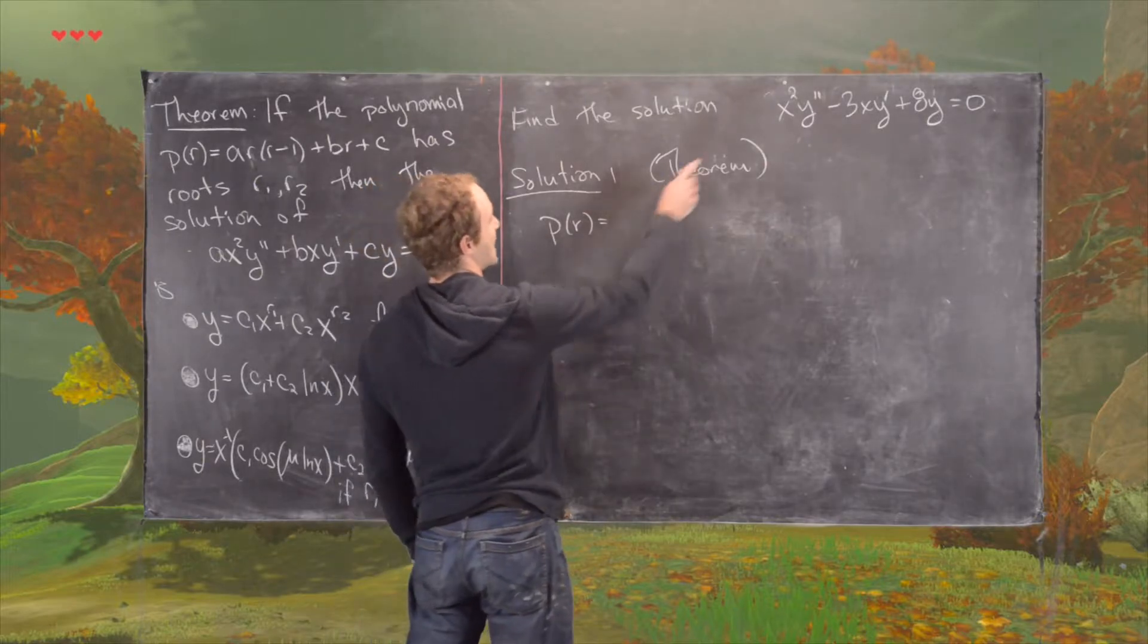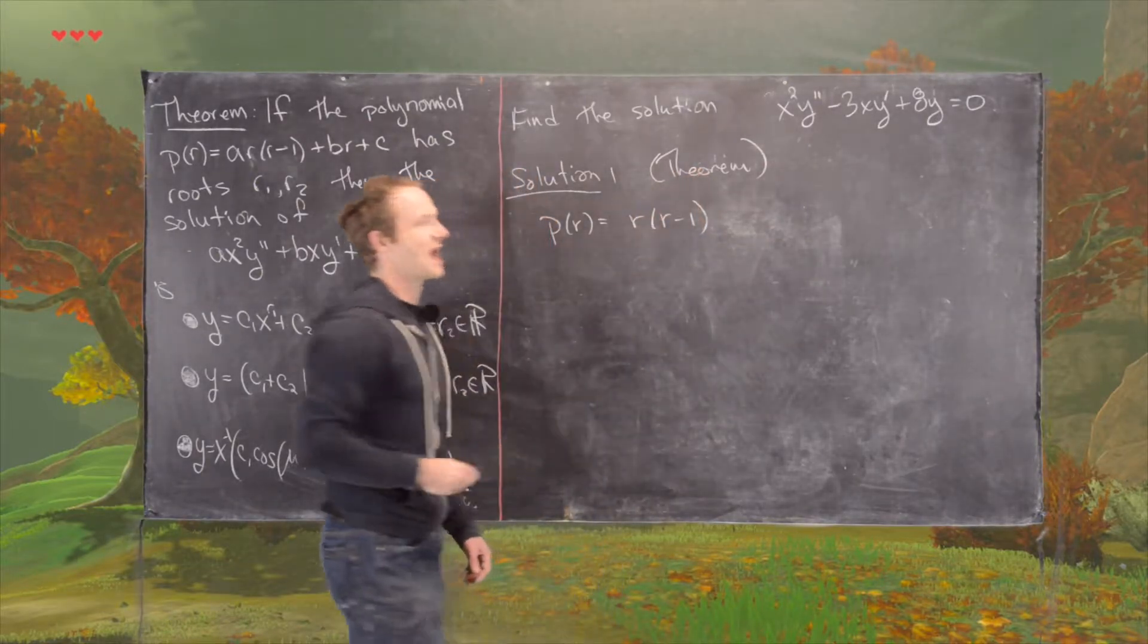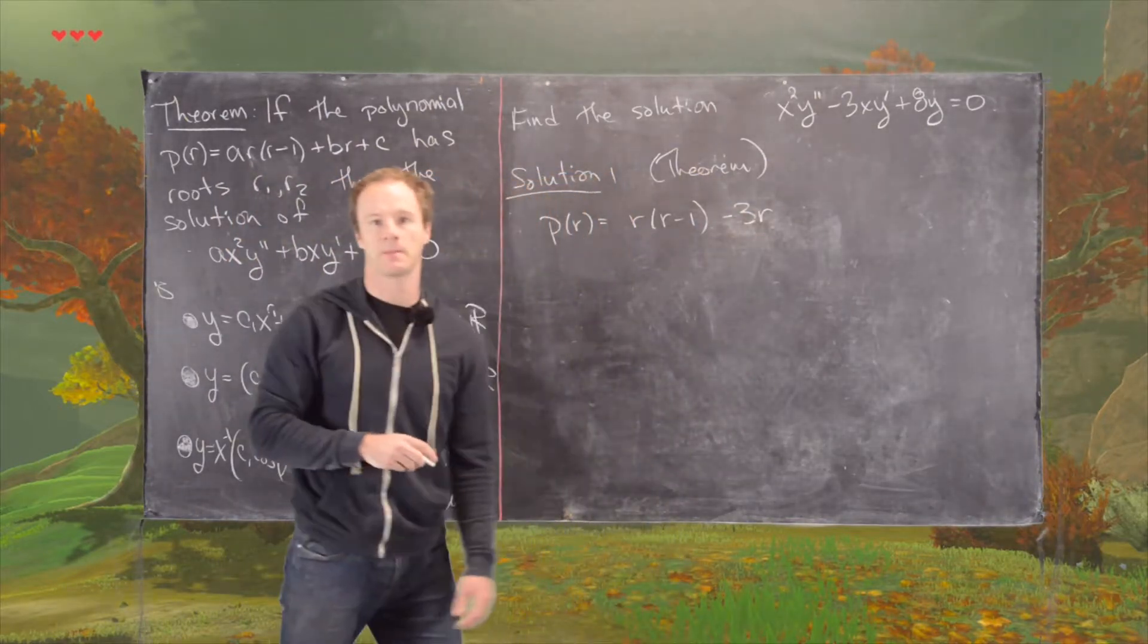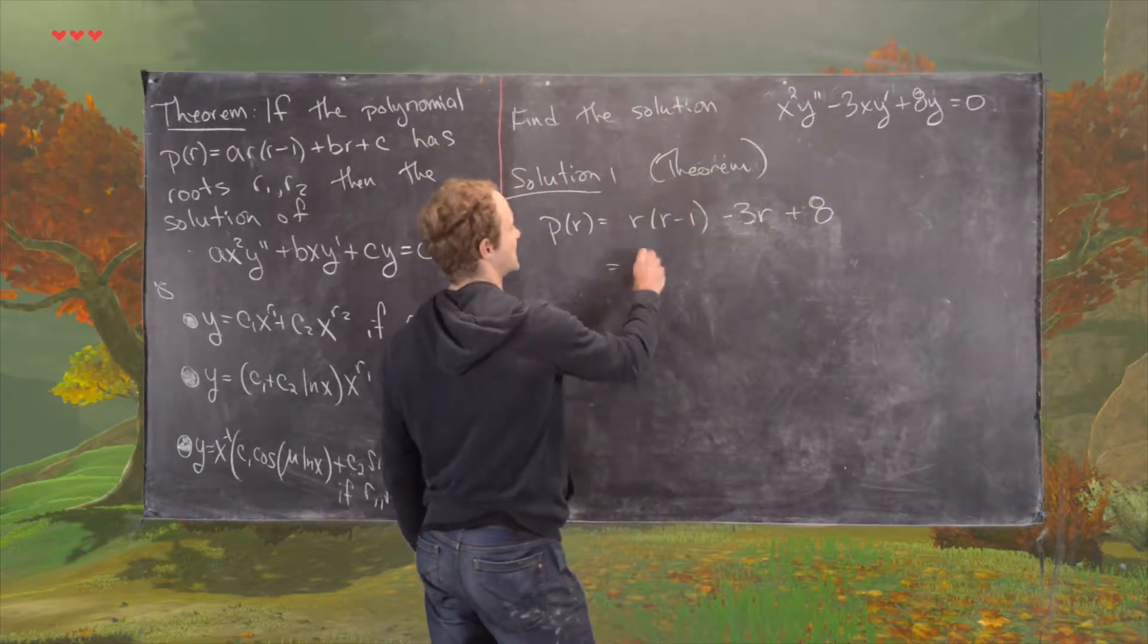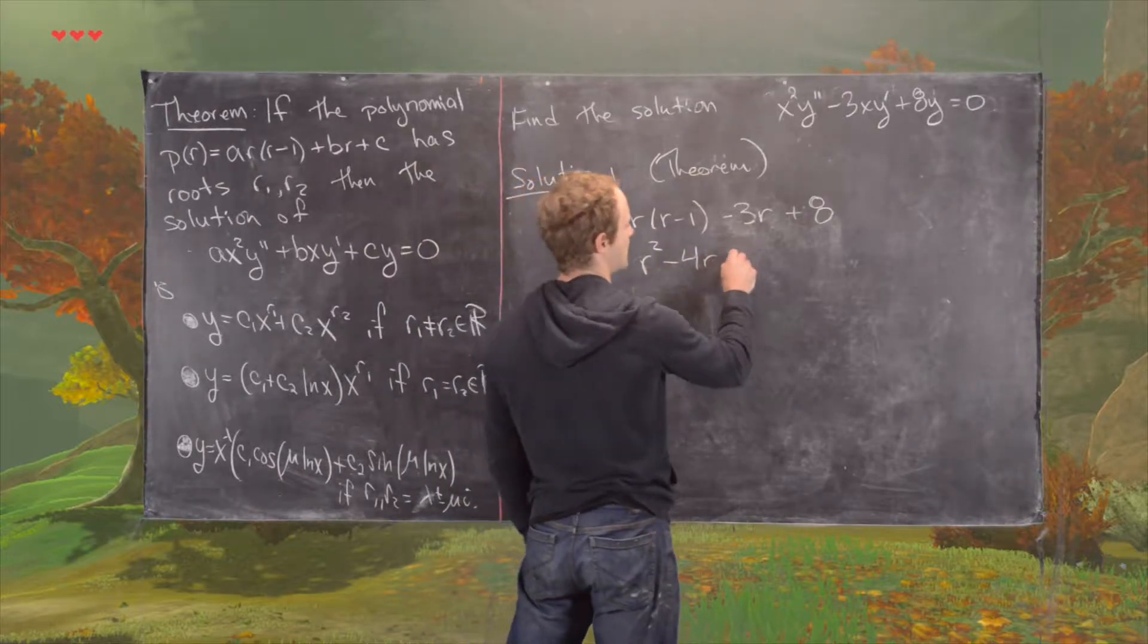we need to look at the polynomial P of R, which is given by 1 times R times R minus 1, because A equals 1, minus 3 times R plus 8. That simplifies to R squared minus 4R plus 8.